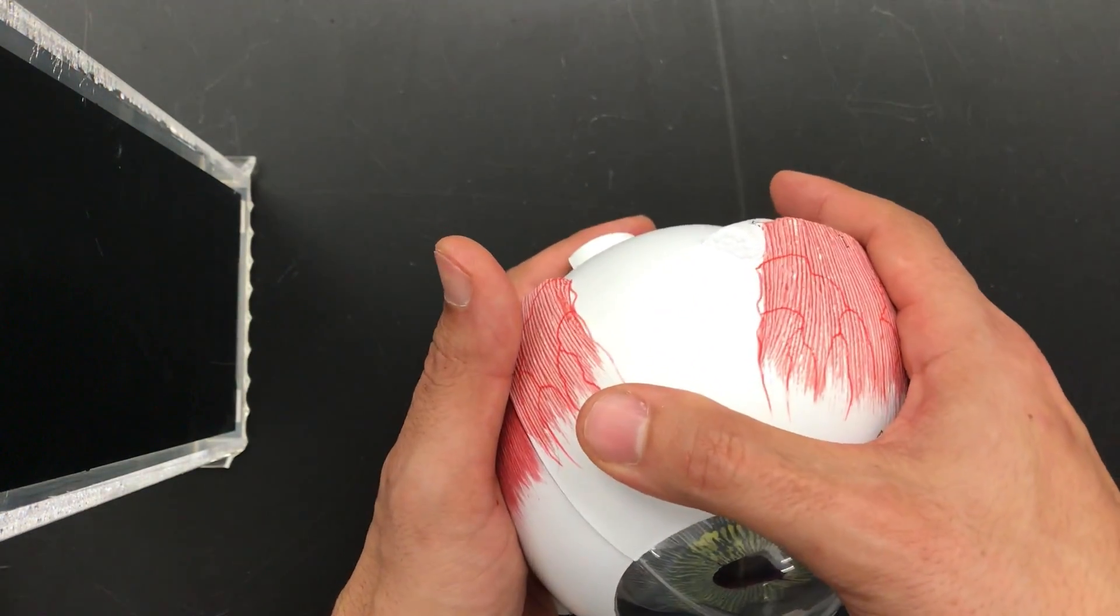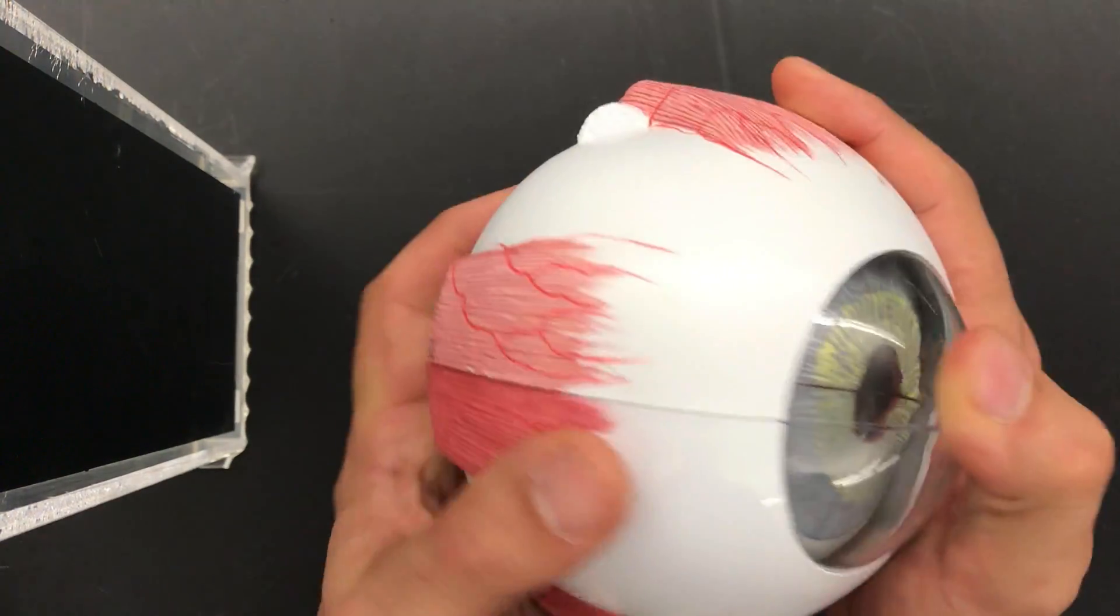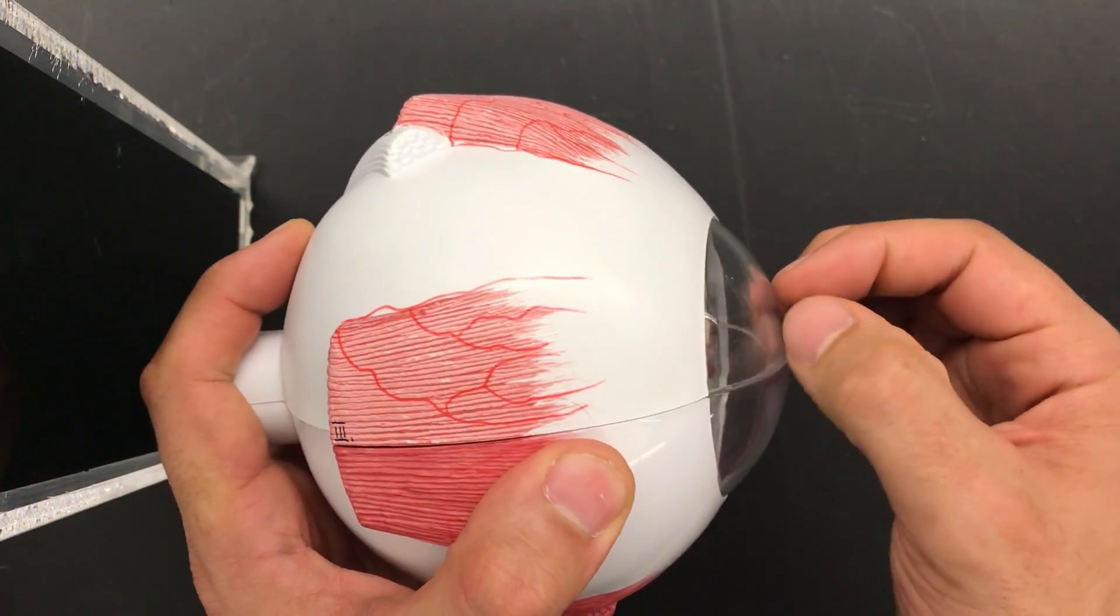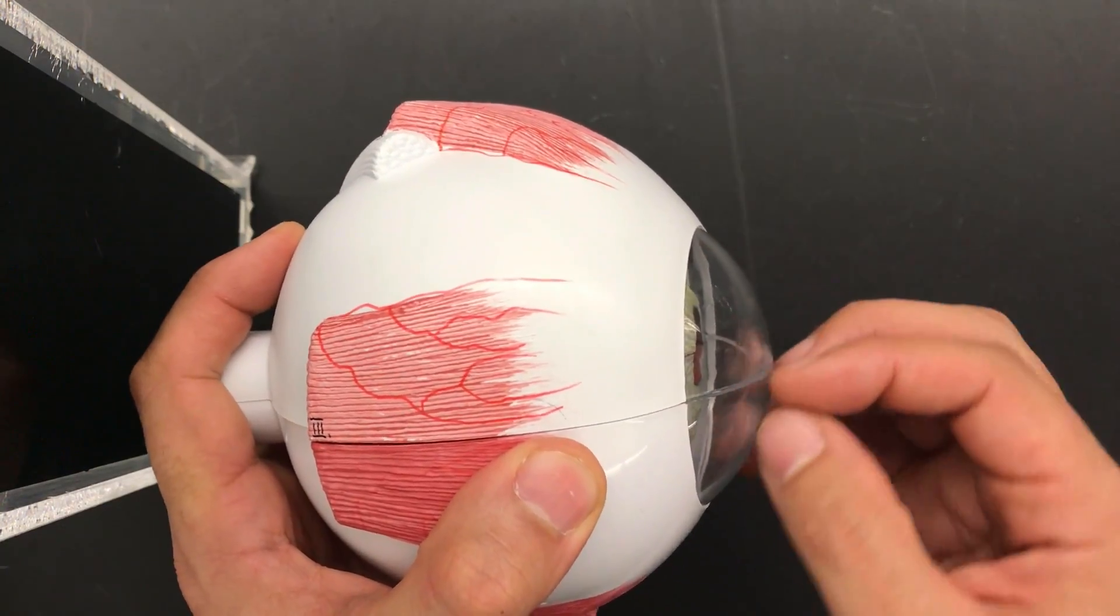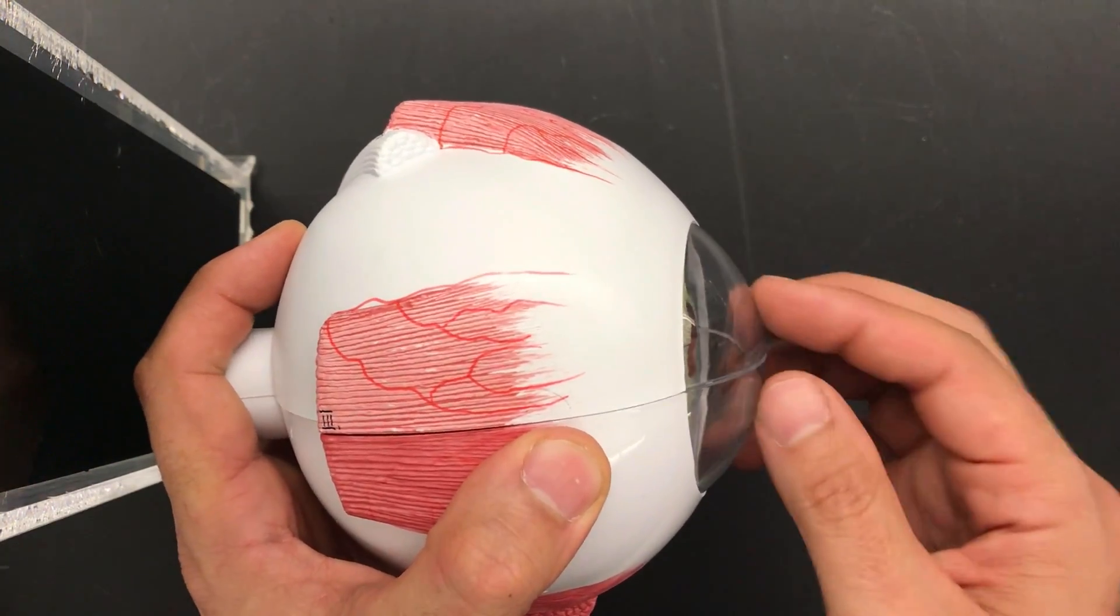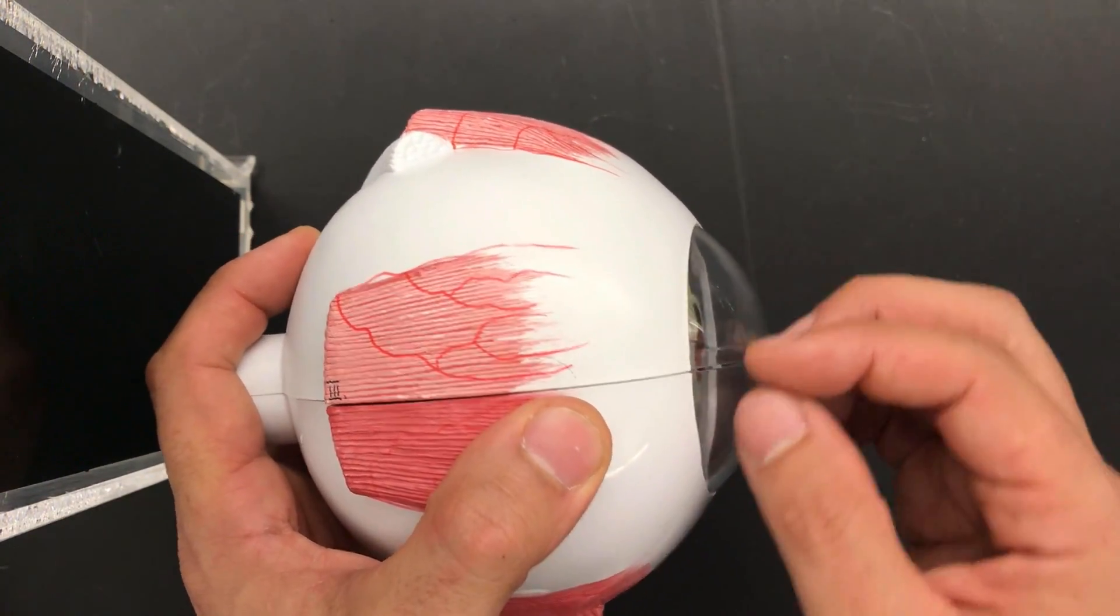The very outside here is the cornea. We say that it's very corny - the cornea is very corny because it always likes to stick out.